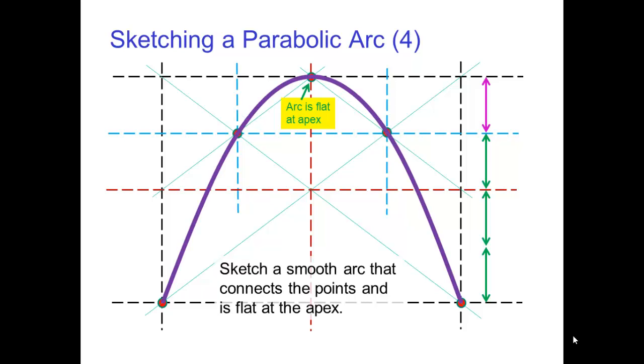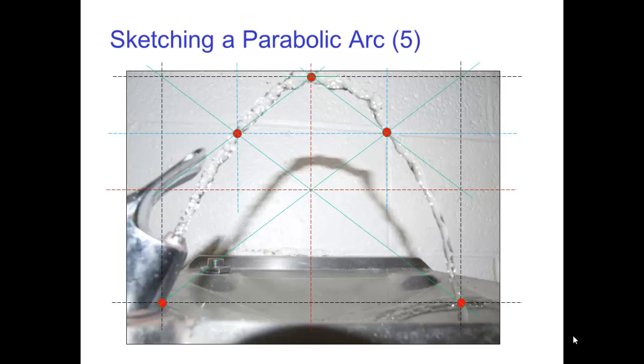Finally, sketch a smooth arc that connects the points and is flat at the apex. Voila, you have sketched a parabolic arc. See? This process may sound complicated, but once you practice it a few times, you realize that it's very simple and quick.